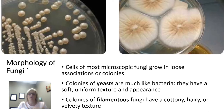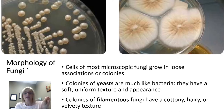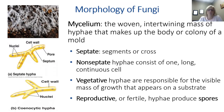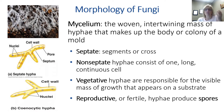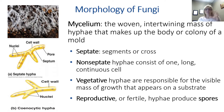Most microscopic fungi grow in a loose association or colony. Over on the left you can see a colony of yeast — much like bacteria, with a soft, uniform texture and appearance. Colonies of filamentous fungi have a more cottony, velvety texture. Mycelium is a mass of hyphae that makes up a colony of mold. Septate fungi have cross walls — septum — that allow the flow of organelles and nutrients between adjacent compartments in the filament. Non-septate, or coenocytic, fungi do not have those separations, forming one long continuous cell where cytosol and organelles move freely from region to region.